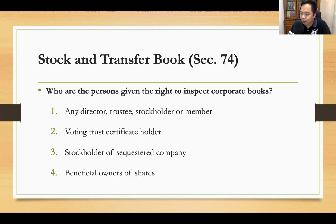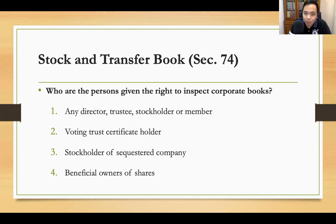Stockholders are investors. In case they would want to make sure that the corporation is in good financial standing, each stockholder can demand to inspect the corporate books. The persons authorized by law with the right to inspect the corporate books are: first, the director, trustee, stockholder, or member; second, the voting trust certificate holder.